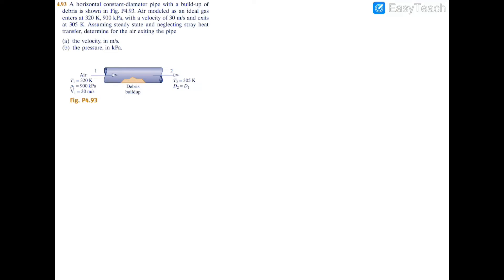In this example we have a simple constant diameter pipe with air flowing in through the left side and exiting at the right side. We're given the temperature on both sides, the diameter is equivalent on both sides, and we have the pressure and velocity on the left side. We're looking for the pressure and velocity on the right side.